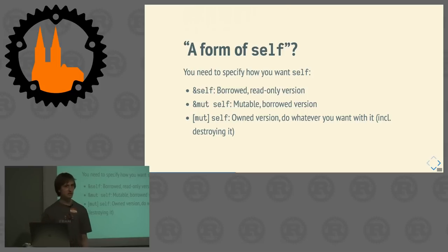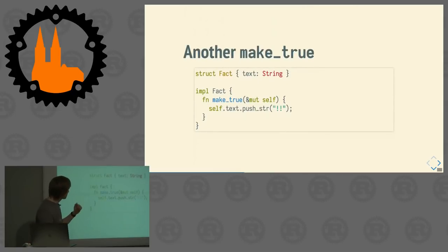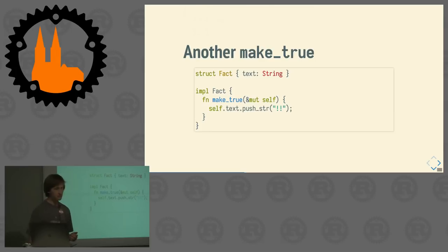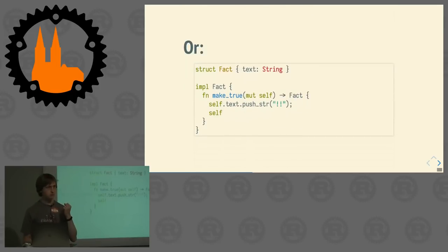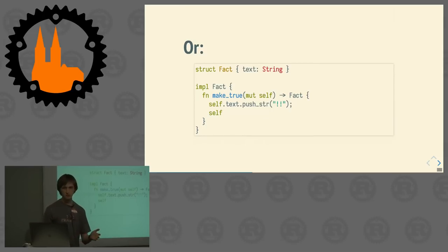Let's look at another implementation of make_true. Here we take a mutable reference to our Fact and we don't generate a new string — we actually just change our Fact. So it's now an alternative fact or something. Another implementation would be to take the Fact as `mut self` without a reference and return it in a changed form, with the difference that you can no longer use the original Fact.